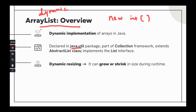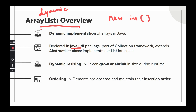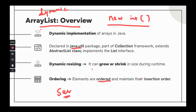Dynamic resizing: ArrayList can grow and shrink in size during runtime. Regarding ordering — ArrayList is backed by an array, which is why it's called ArrayList. Unlike a fixed-size array, it is much more flexible. Because it is backed by an array, insertion order is maintained. So if you add one, two, three to the list, when you print it out you will see the same order.